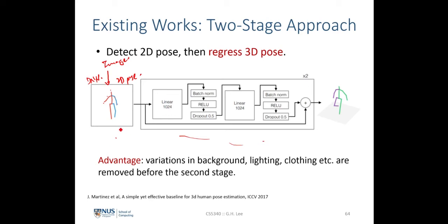Once stage one is complete, we input the 2D pose into another network to produce the 3D pose. The advantage is that lifting from 2D pose to 3D pose is the more difficult part because it's ill-posed. If we directly use the image, it may contain distracting backgrounds, making the process harder. Estimating the 2D pose first alleviates the noisy background problem from the more difficult 2D-to-3D lifting step.